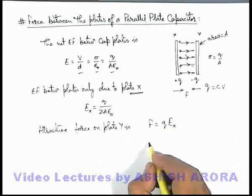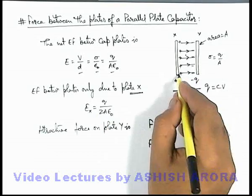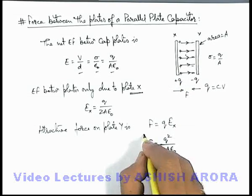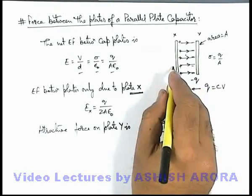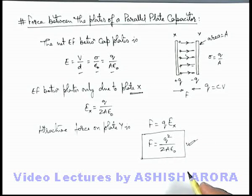So if I substitute the value of this electric field, you can see I am getting the force acting on the plate Y due to plate X. That will be q square by 2 A epsilon not. And the same amount of force will be exerted by plate Y on plate X according to Newton's third law.